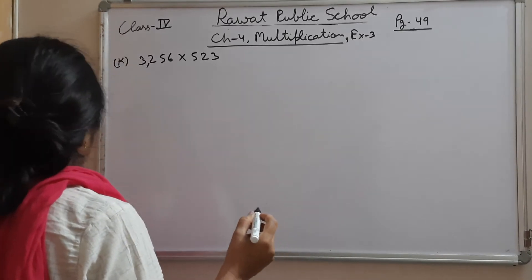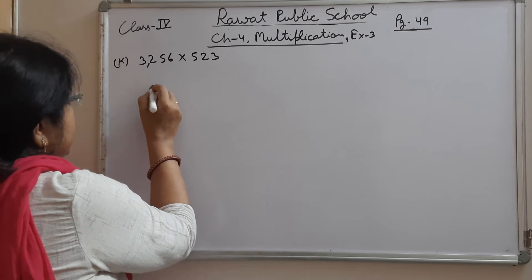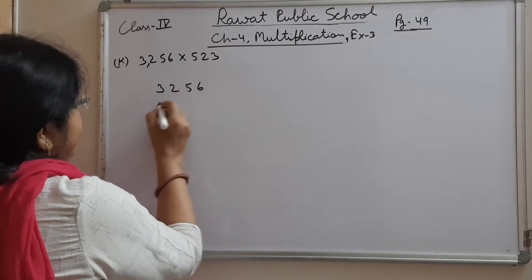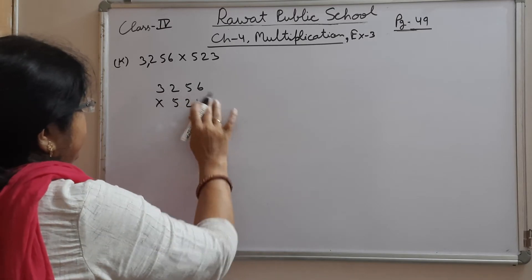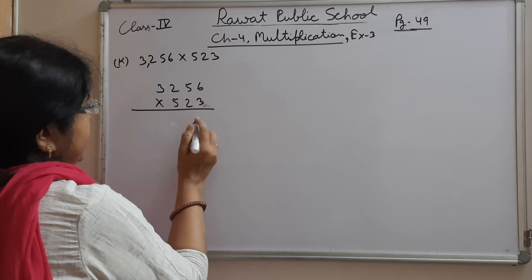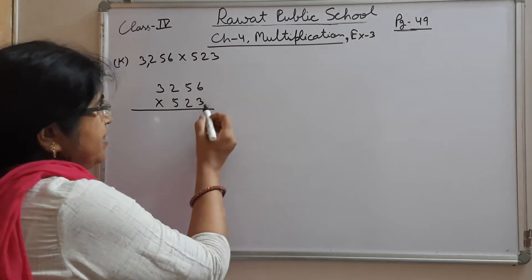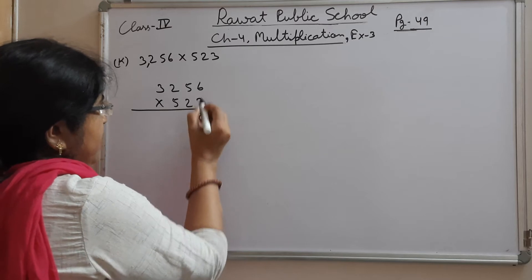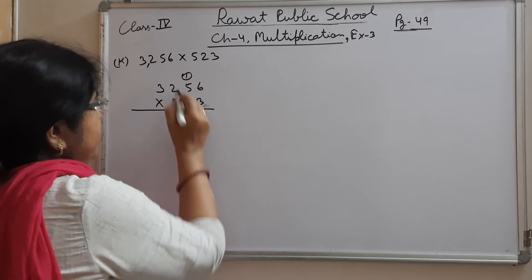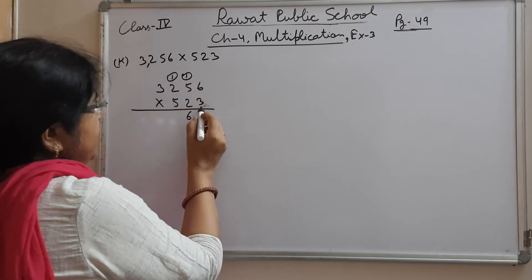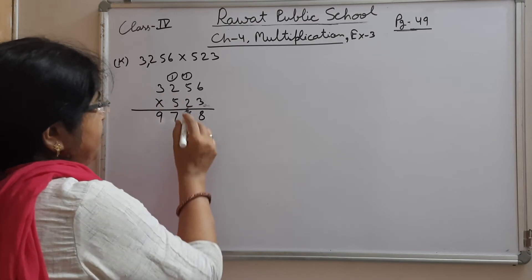Let's start: 3256 × 523. To multiply this, as I told you yesterday, we first start with the ones place. So: 3×6=18, 1 carry over; 3×5=15, plus 1=16, 1 carry over; 3×2=6, plus 1=7; 3×3=9. That gives us the ones place result.